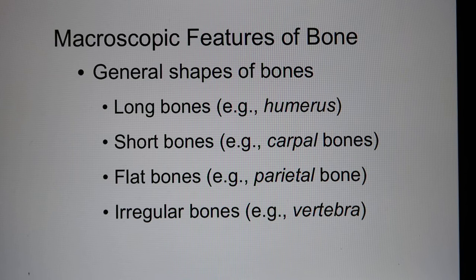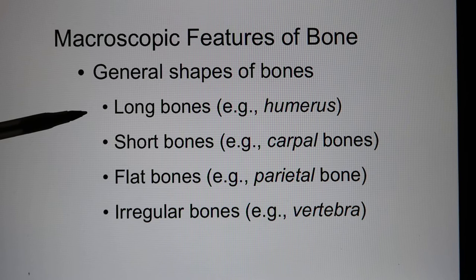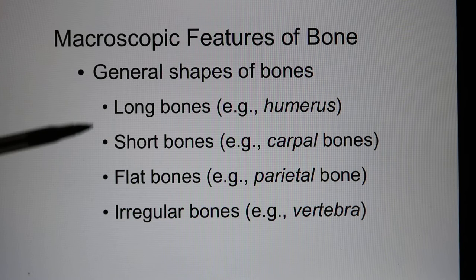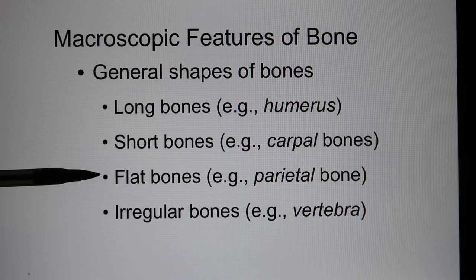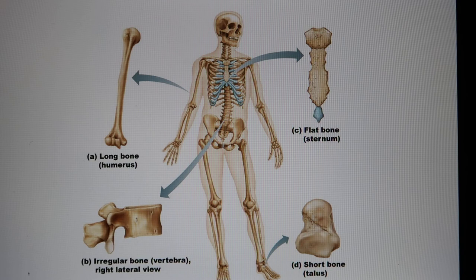Bones can be divided into different groups based on shape, not based on actual size. If the shape is long, it's a long bone — you can have a very short long bone; as long as the shape is long, it's a long bone, like your finger. Short bones are short, like the carpals, the bones in your wrist. Flat bones have a flat shape. Irregular bones are those that don't belong to any of these three categories.